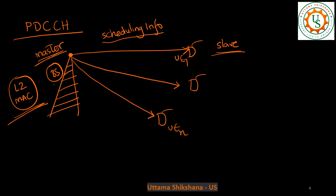The base station takes the responsibility of performing scheduling for different UEs, and that is done in the L2 layer or MAC layer. Once the scheduling of different UEs is decided, that scheduling information should be sent to the UE — and that is when the PDCCH channel comes into picture. That scheduling information, or control information, is informed to the UE via PDCCH.